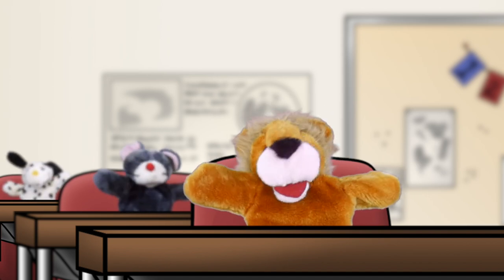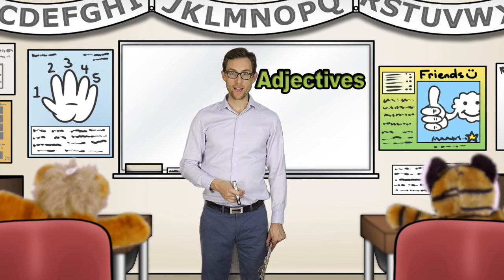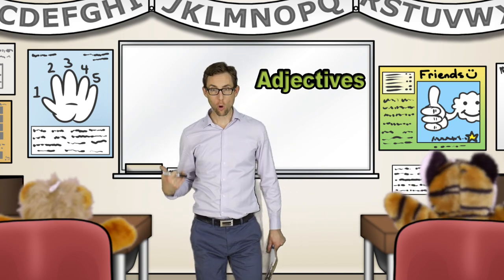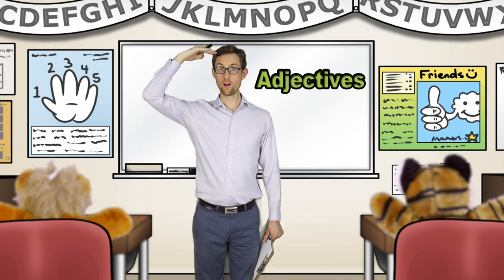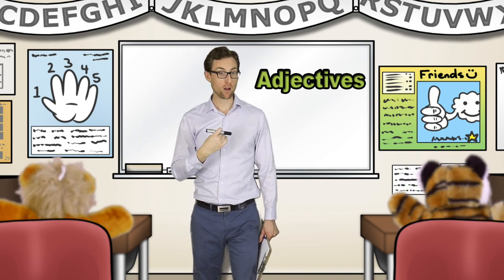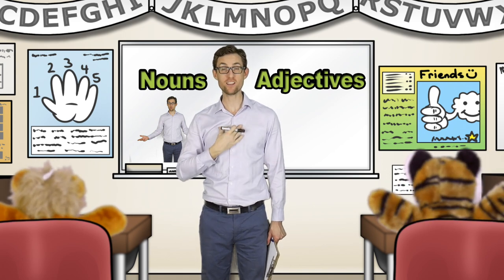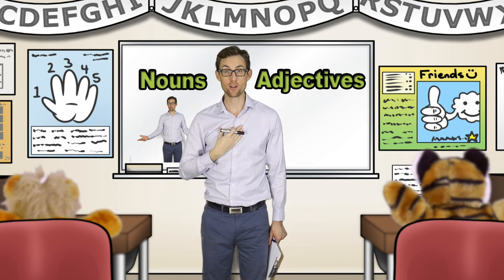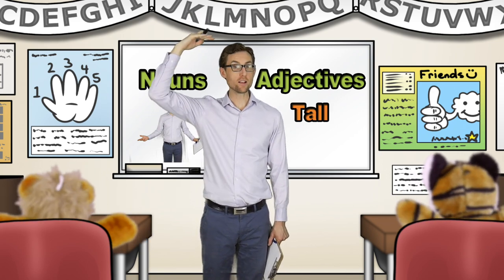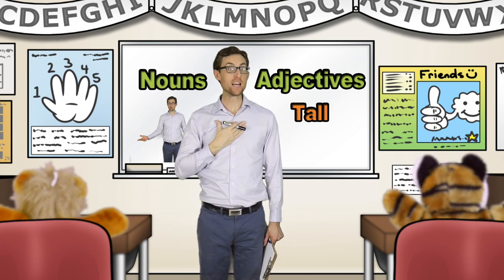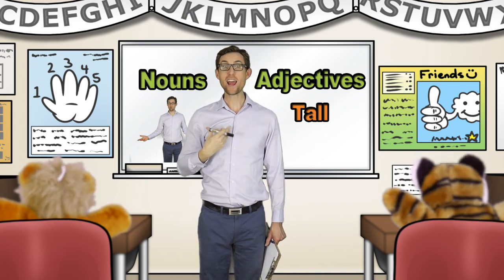I don't understand! Okay, I'm tall. I'm very tall. Now, I am a noun. Mr. Chris is a noun. But I am tall. So, I am describing me as tall. That is an adjective.